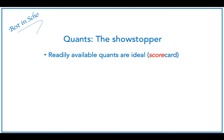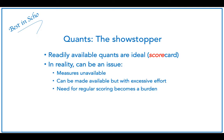Just to be clear, readily available quants are ideal in a balanced scorecard — after all, it is a scorecard. In reality though, getting quantifiable measures can be an issue. They are often unavailable, or sometimes they can be made available but with excessive effort. Compiling results for regular scoring can easily become a burden with all those quants.